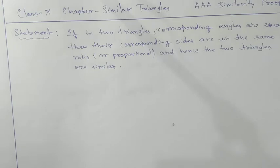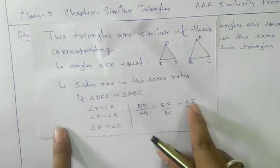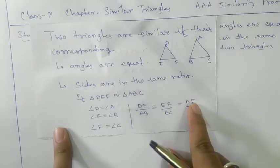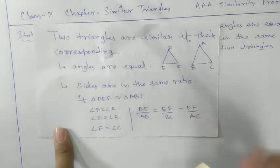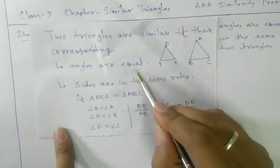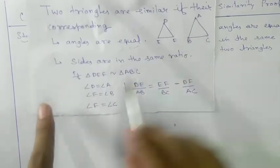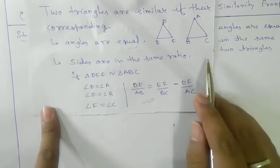Namaste students. Today we are going to prove the AAA Similarity Criterion. Before proving the theorem, let's recapitulate the definition of similar triangles. Two triangles are similar if their corresponding angles are equal and their sides are in the same ratio.